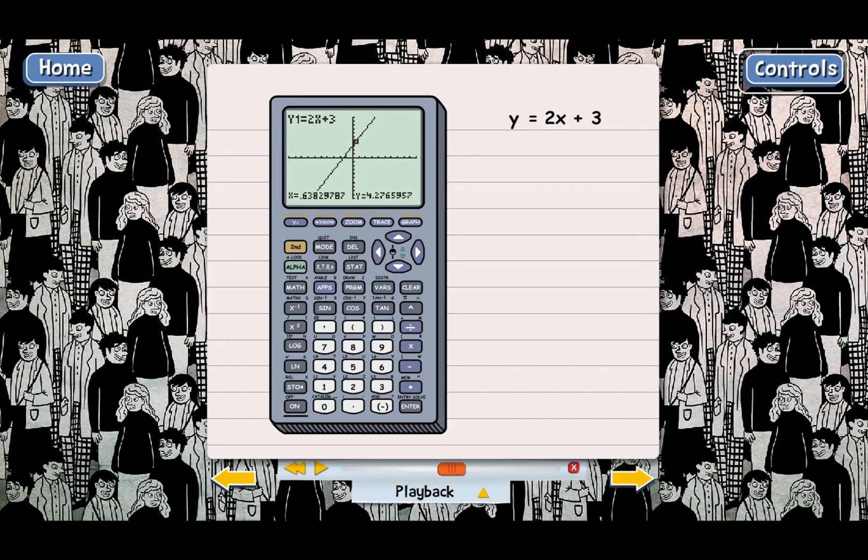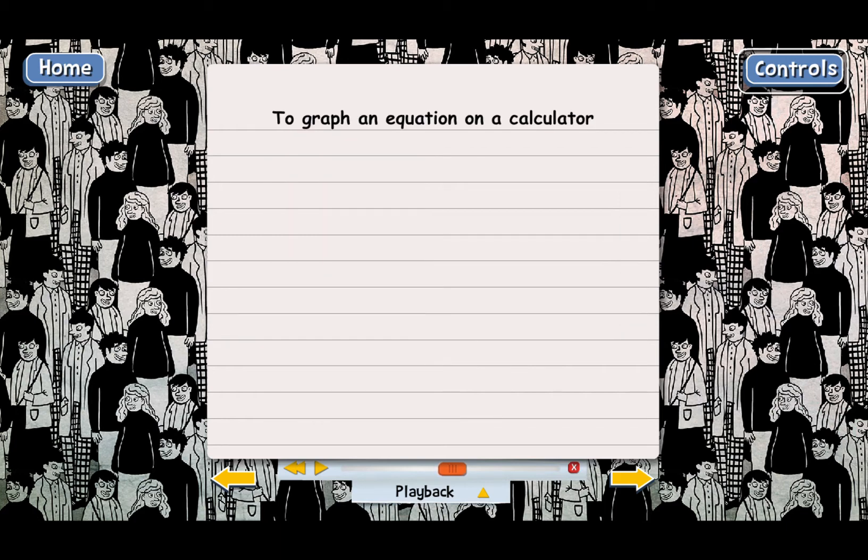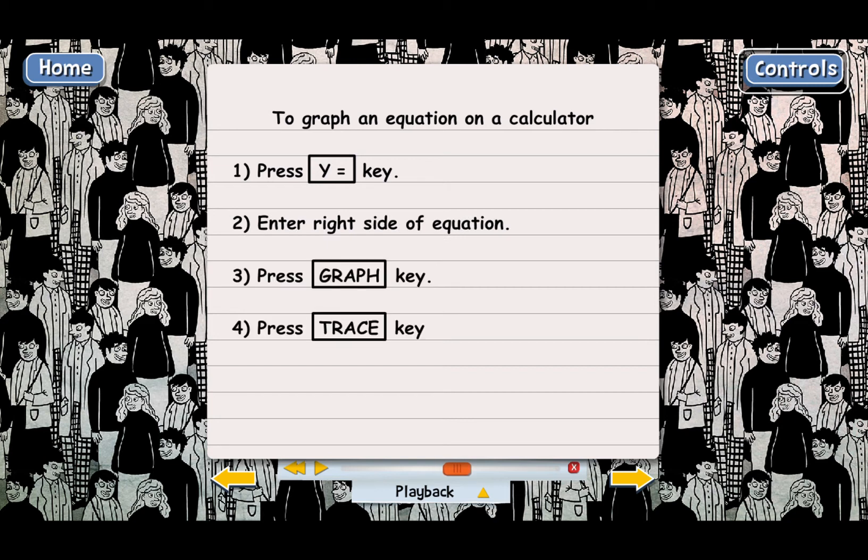But that's how you can graph an equation on a calculator. Let me just list the steps. First, you press the y equals key. And then you enter the expression on the right side of the equation. And then you press the graph key. And after that, you press trace so you can see the equation and analyze the graph better.